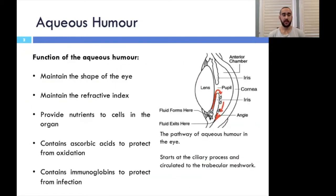As previously alluded to in the presentation, the aqueous humor plays an essential role in the function and maintenance of the eye. The most significant effect is that it maintains the intraocular pressure of the eye, which helps retain the shape and control the refractive index, both of which are necessary for the eye to correctly interpret images. In addition, the humor contains nutrients, ascorbic acids, and immunoglobulins to protect and sustain the cells.